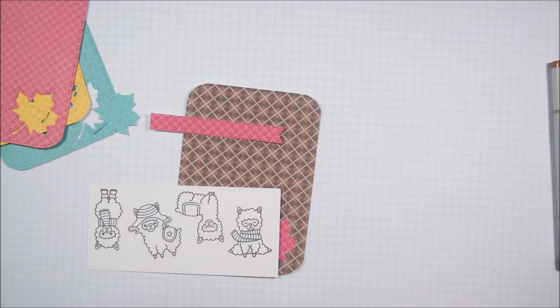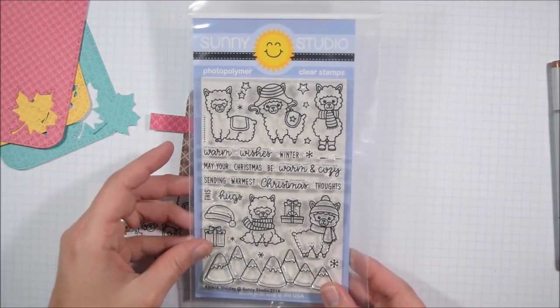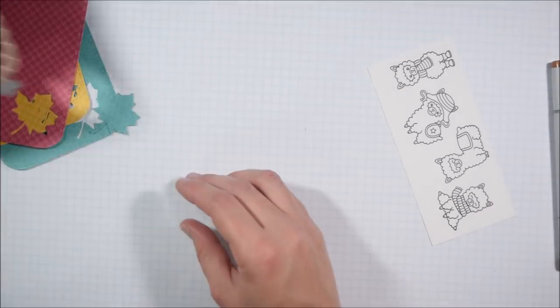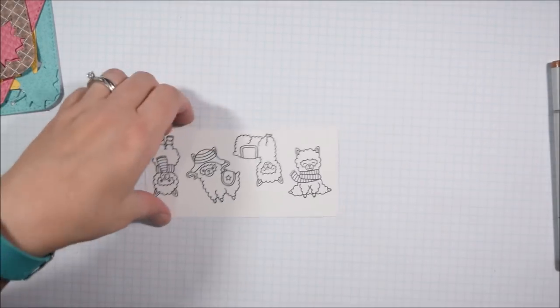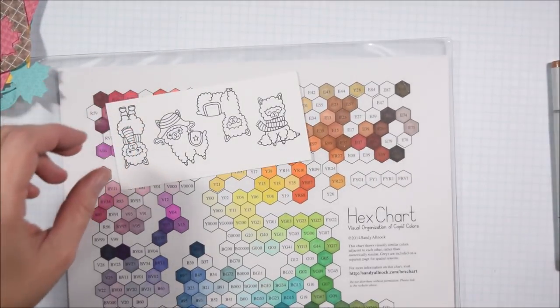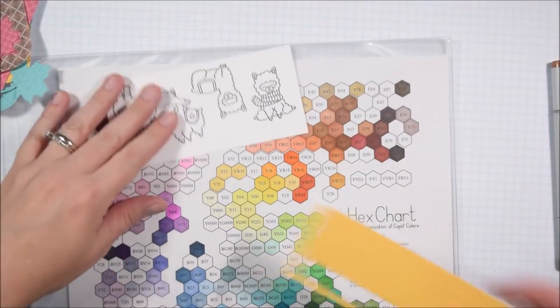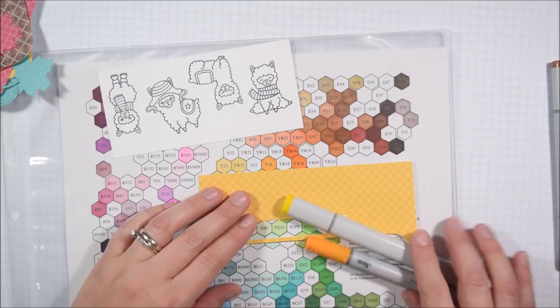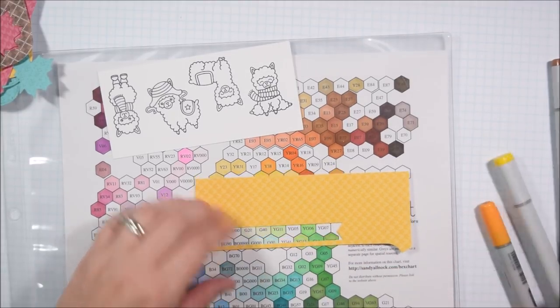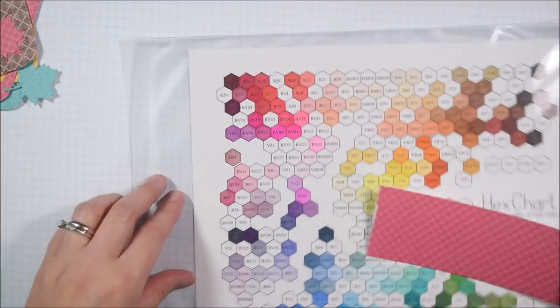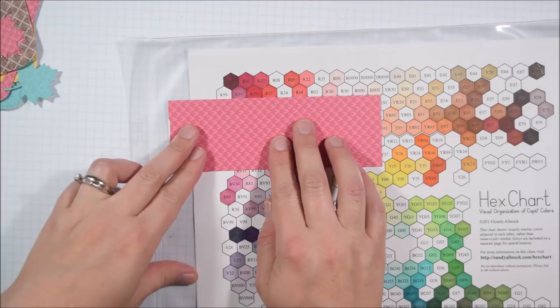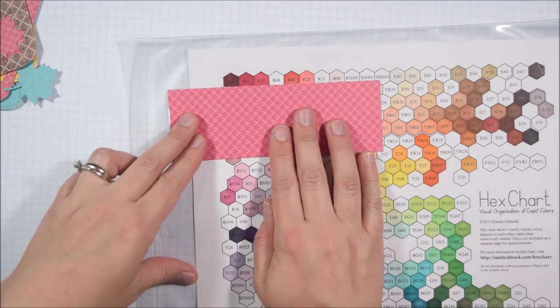I also got the Knit Picky Lawn Fawn 6x6 paper pad so I had a lot of fun goodies that I was ready to play with. I got started by stamping four of the alpacas that looked most like fall alpacas. I just picked my four favorite alpacas.